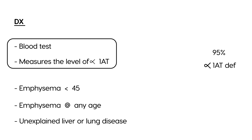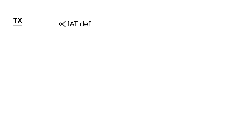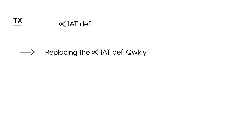If you do suspect it, a blood test measures the level of alpha-1 antitrypsin. Once you've diagnosed it — a patient with respiratory symptoms, liver disease, no smoking history, no occupational exposure — the treatment is replacing the alpha-1 antitrypsin enzyme via a weekly injection.